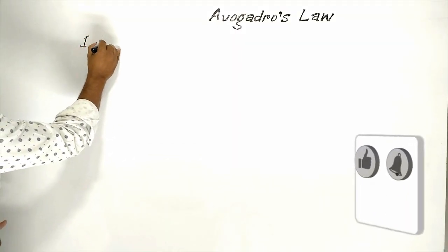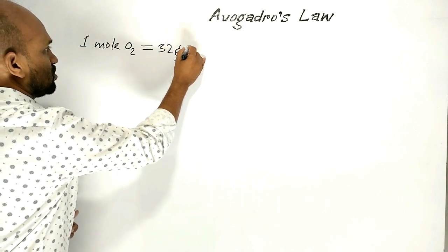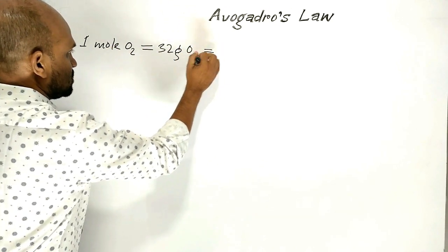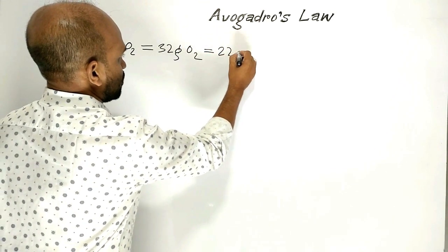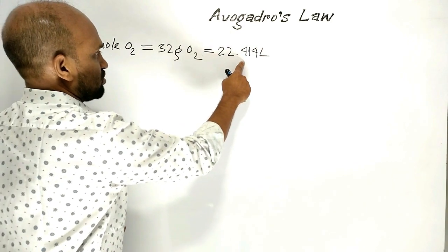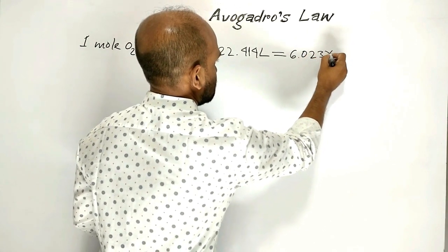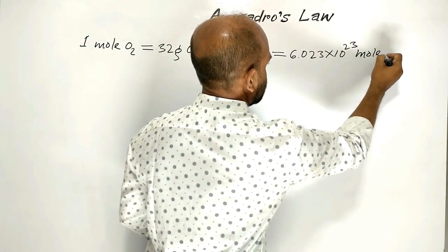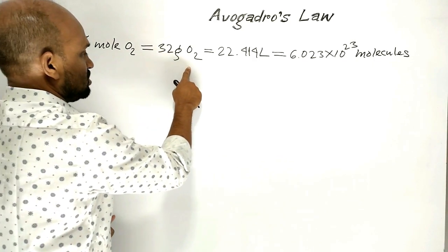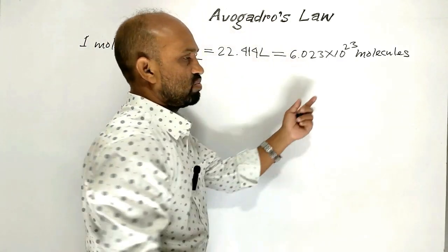One mole of oxygen is equal to 32 grams of oxygen. Mole means molecular mass expressed in grams. 32 grams of oxygen has a volume of 22.414 liters. This 22.414 liters of oxygen contains 6.023 × 10²³ molecules. So, one mole of oxygen — that is, 32 grams — has a volume of 22.414 liters containing that number of molecules.